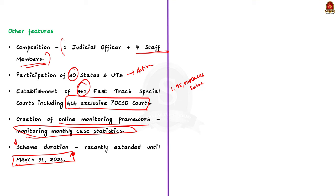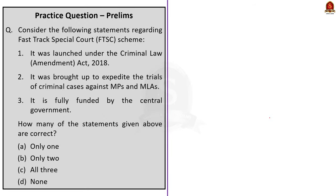To summarize, the Centre launched the Fast Track Special Court Scheme to expedite the trial of cases and deliver immediate relief to victims of sexual offences. This is all about the discussion on the FTSC Scheme. We also saw a brief background about the Nirbhaya Fund. With these learned points, let us conclude this discussion and take up the next news article for our analysis.